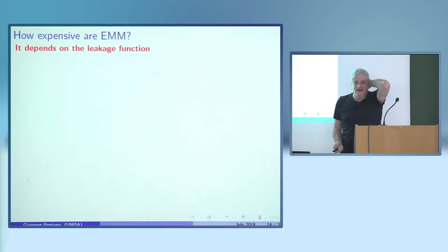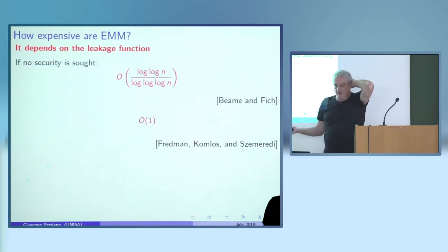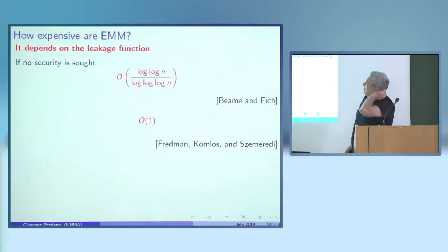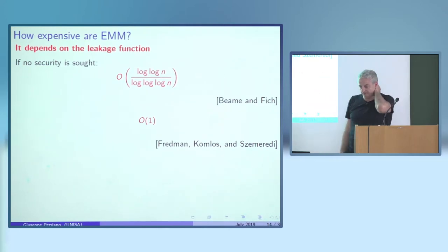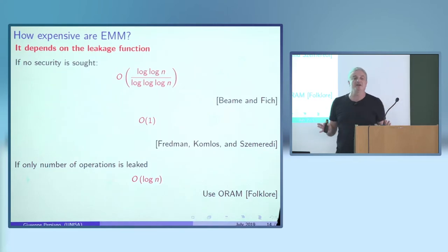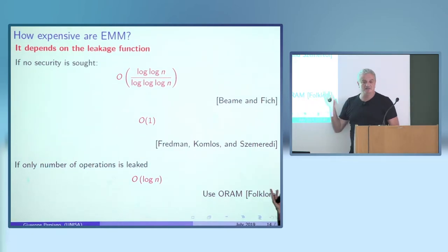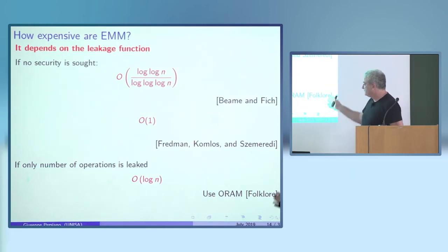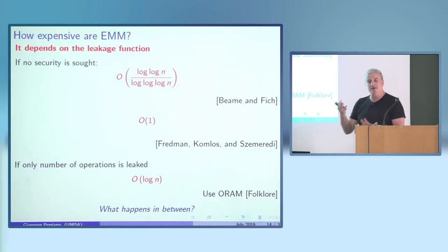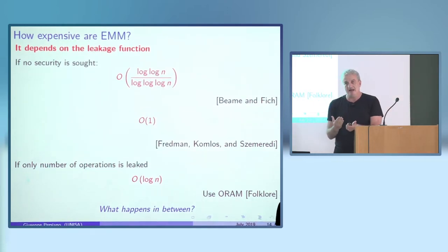How expensive are encrypted multi-maps? That depends on the leakage function. Without security, data structure textbooks give log n / log log n overhead, and there's perfect hashing by Fredman, Komlós, and Szemerédi which is constant. On the other end, if you only want to leak the number of operations, you get a log n overhead using ORAM — a folklore construction where you put all data in ORAM and download it.